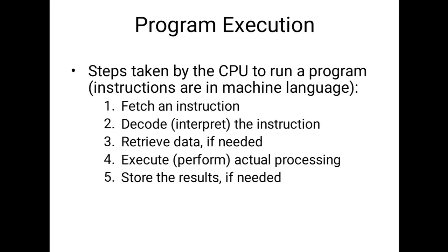The steps taken by the CPU to execute a program are: first, fetch the instructions written in statements from the system; second, decode and interpret the instructions, converting them to machine code; third, retrieve data if needed from disk; fourth, execute the code — the actual processing in machine language; the compiler reads all statements one by one and checks their corresponding machine code for errors; if there are errors it shows them, otherwise it proceeds; and finally, store the results if needed.